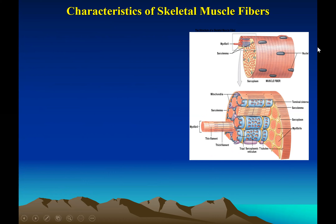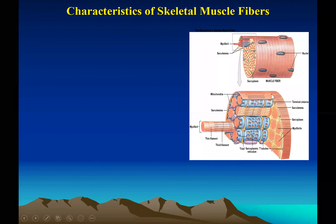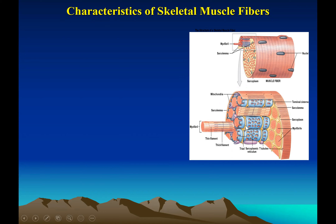When you zoom into the structure of a muscle fiber or muscle cell, it has all the components of a regular cell but they are called by different names. The cell membrane is called the sarcolemma. The cytoplasm is called sarcoplasm. The endoplasmic reticulum is called the sarcoplasmic reticulum. The sarcolemma dips into the cell to form transverse tubules, or T-tubules, which carry the action potential from outside to inside the cell, signaling the muscle to contract.